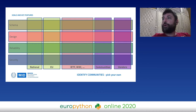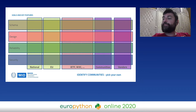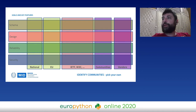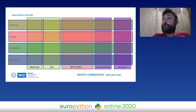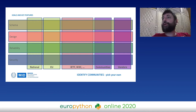The third column — the standards column — is the one we will focus on today. It contains the IETF community, the World Wide Web Consortium, and other standard communities. Here we put all the relevant standards we are going to use to achieve the schema design, reliability, and security goals.